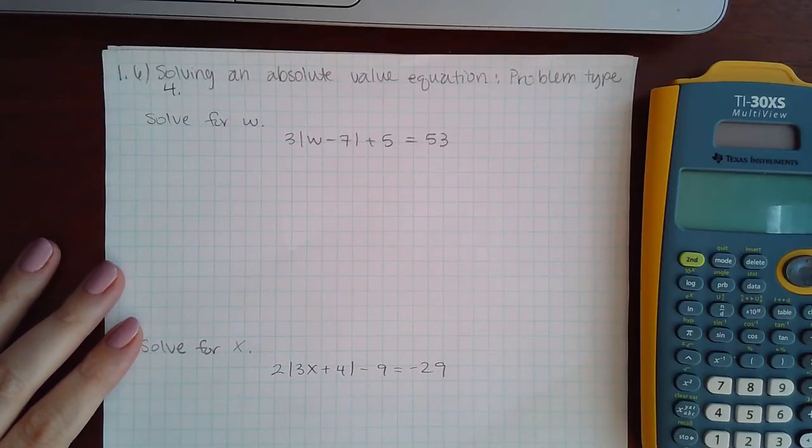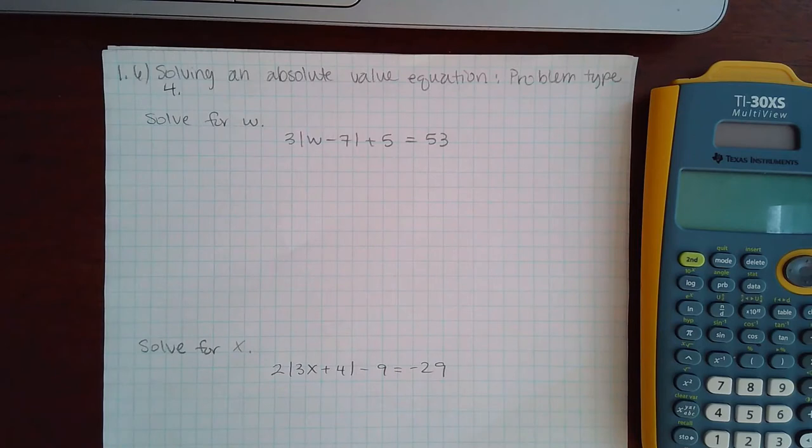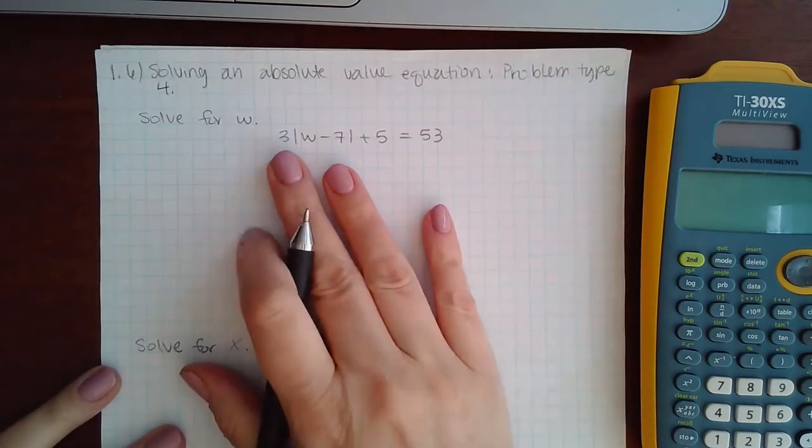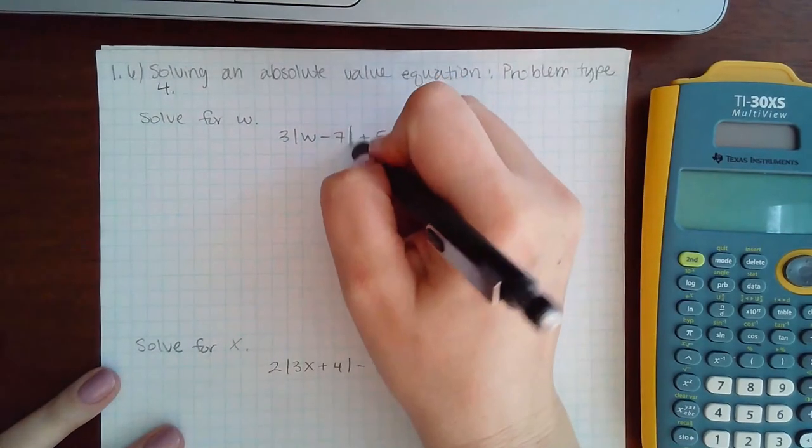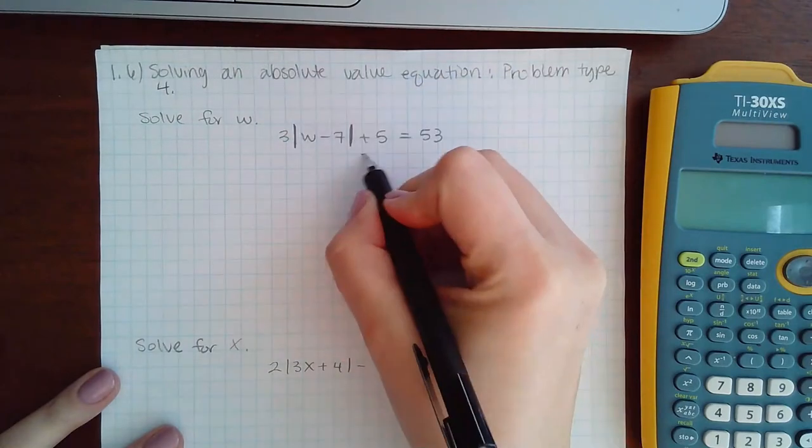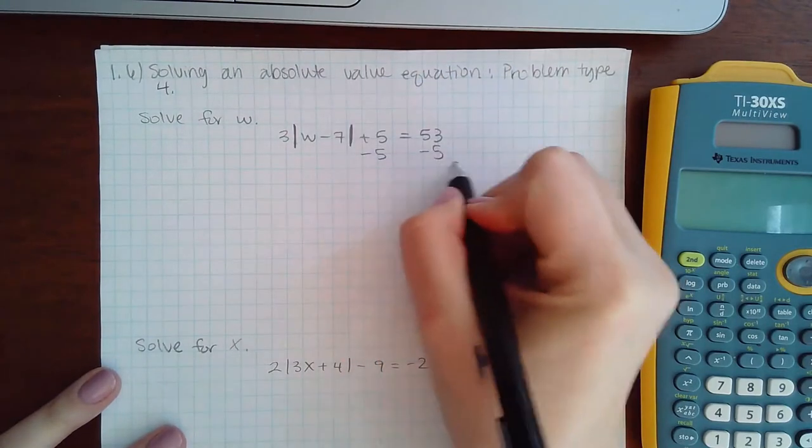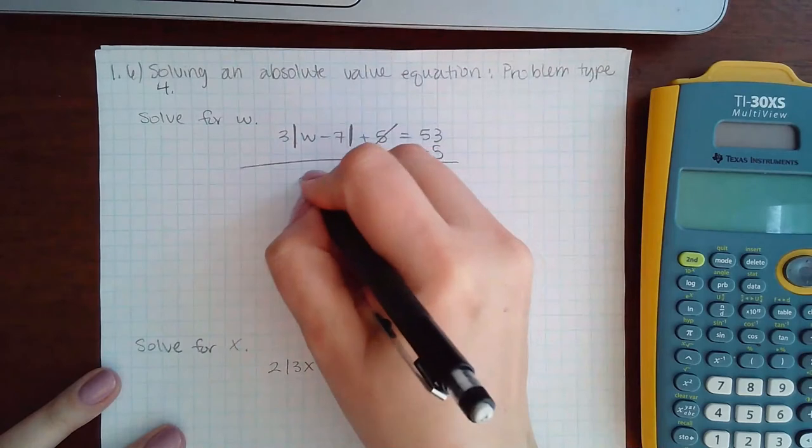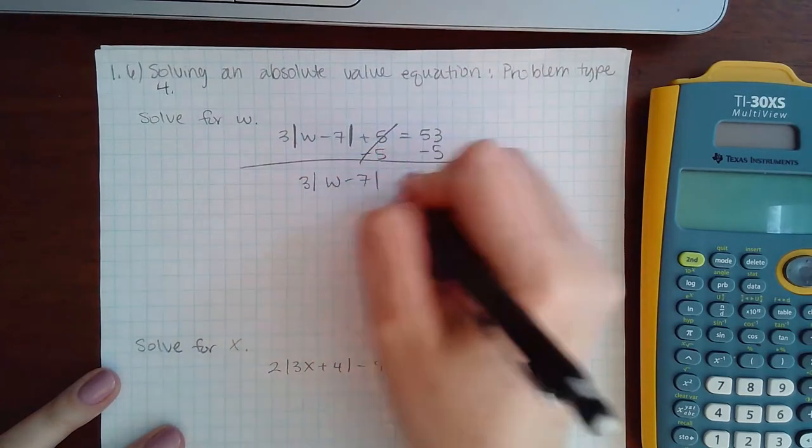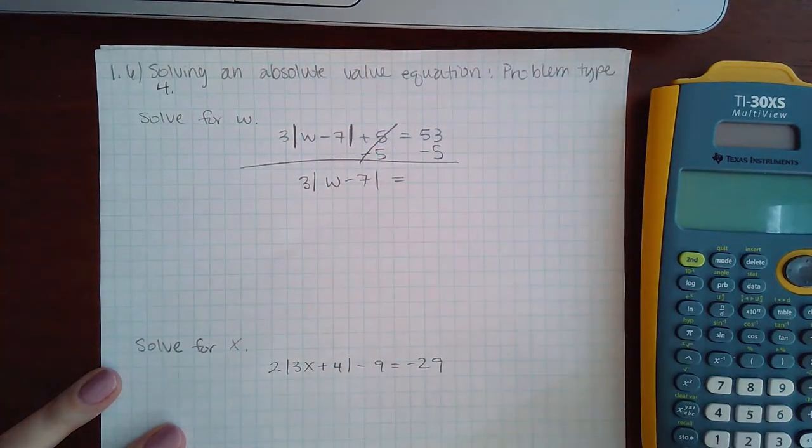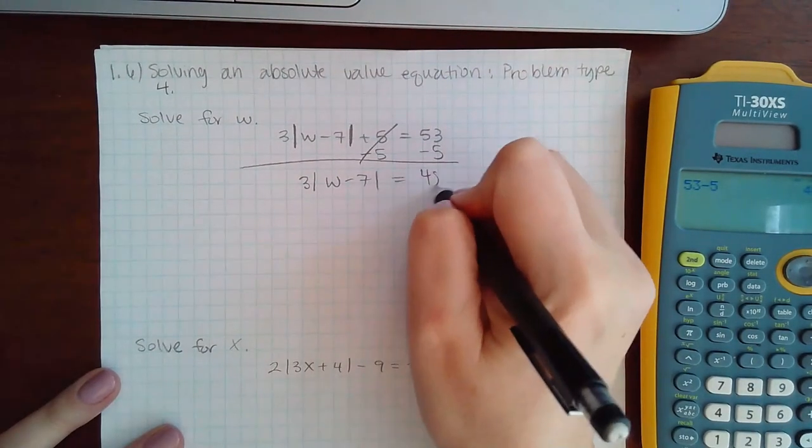Okay, here we have solving an absolute value equation problem type 4. I do need to isolate the bars just like you would isolate a variable. You need to get rid of the stuff that's being added or subtracted first before you get rid of the stuff that is multiplied and divided. So 53 minus 5 is 48.